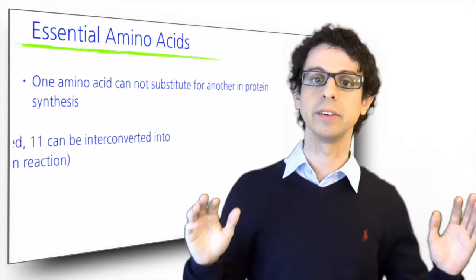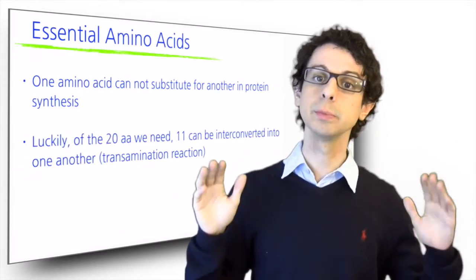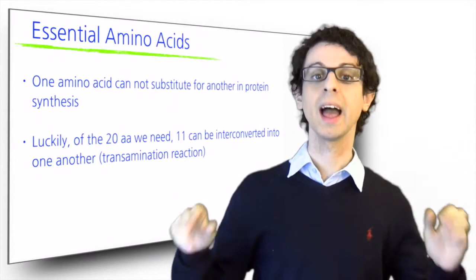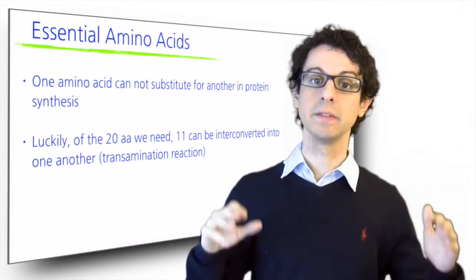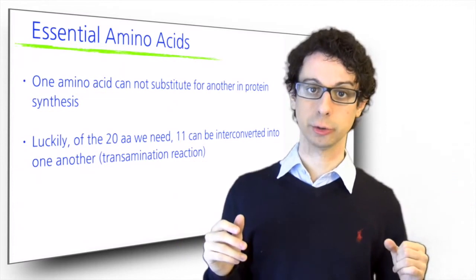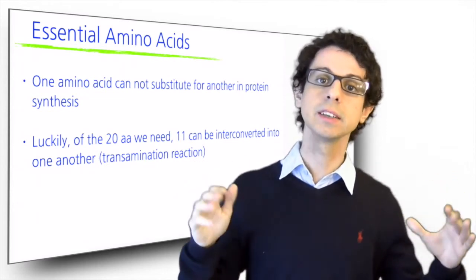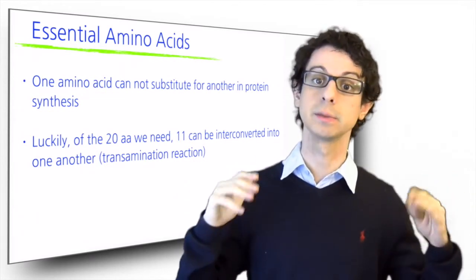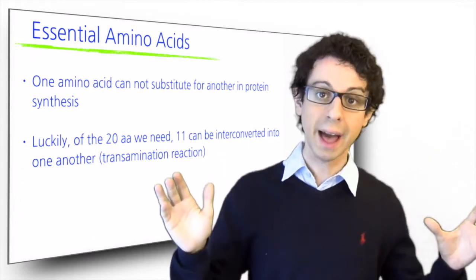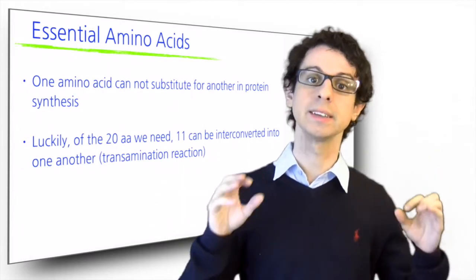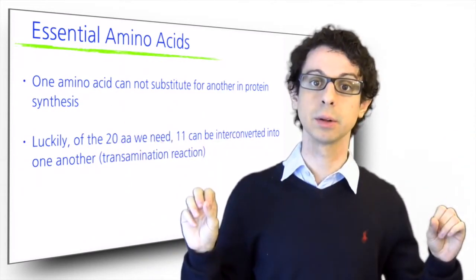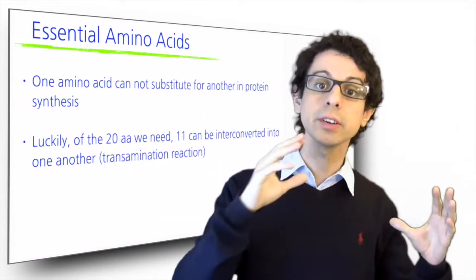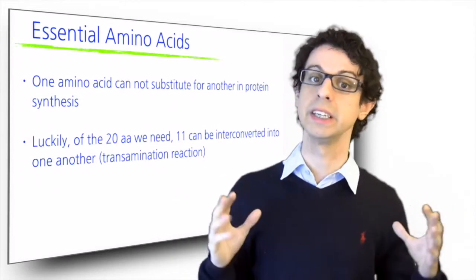Luckily, however, of the 20 amino acids that we need to build all of our different proteins, 11 can be interconverted into one another via the transamination reaction. This means that if we need a specific amino acid to build a specific protein and we don't have it, in most cases we can take another amino acid and using stuff that's usually readily available around the cell, we can convert it to the amino acid that we need.